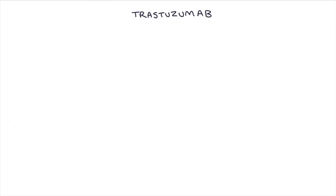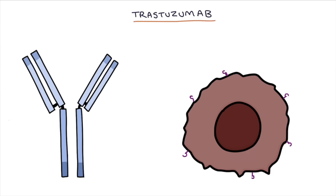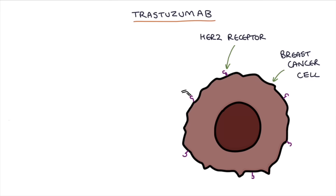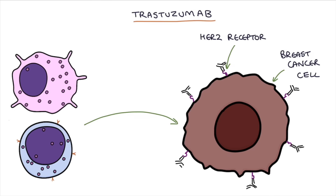Another example is trastuzumab — a monoclonal antibody that targets the HER2 receptor protein. So for a patient with breast cancer known to be HER2 positive, we can give trastuzumab, which then targets the HER2 receptor protein and causes the immune system to attack cells associated with that protein.